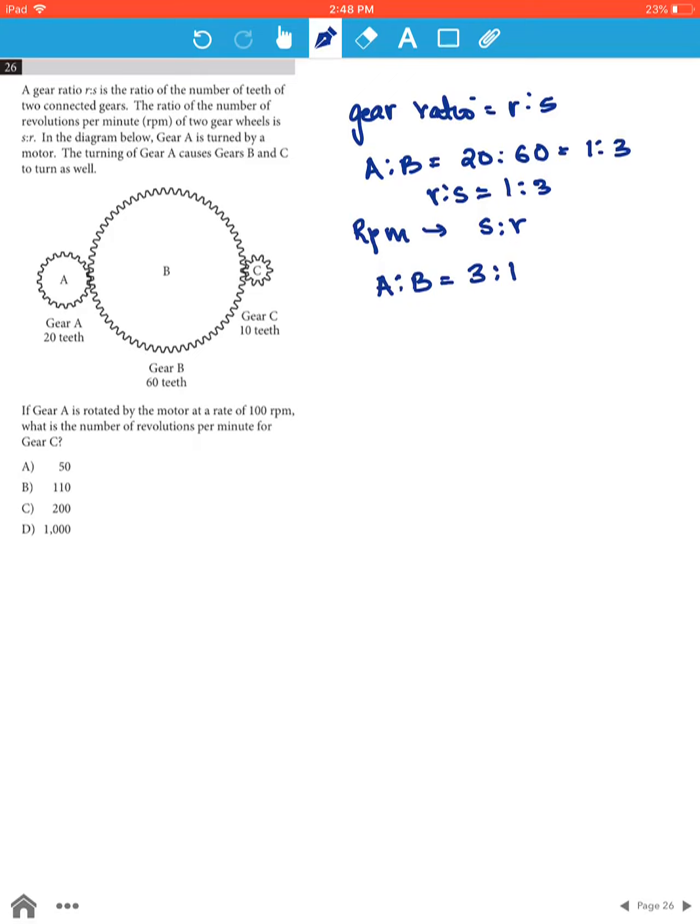is 100. Therefore, if 3 revolutions is 1, then for 100 revolutions it will be 100 over 3. So the revolutions per minute for B is 100 over 3.